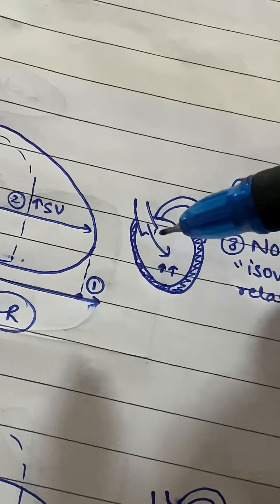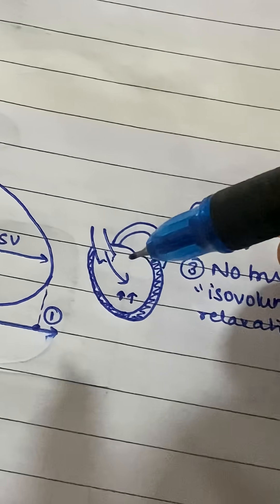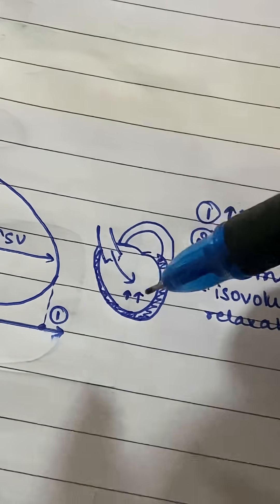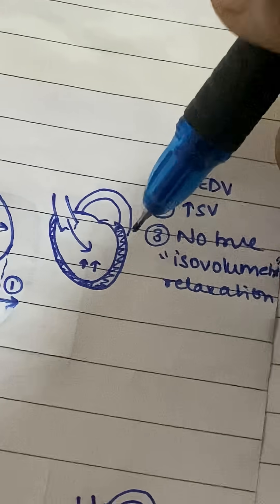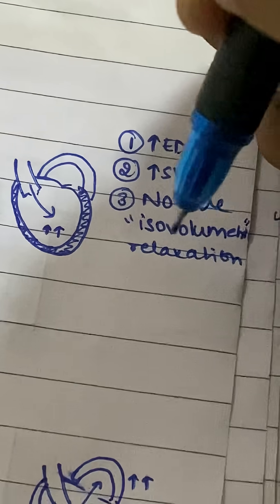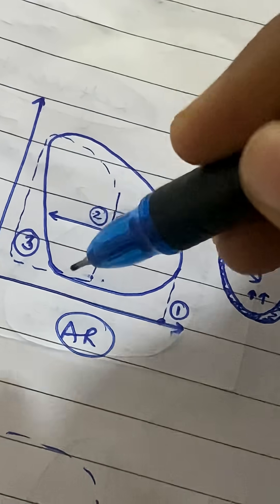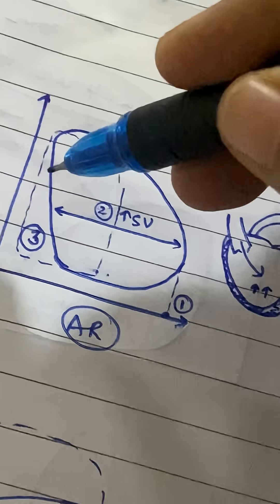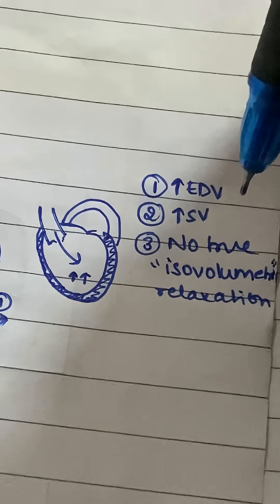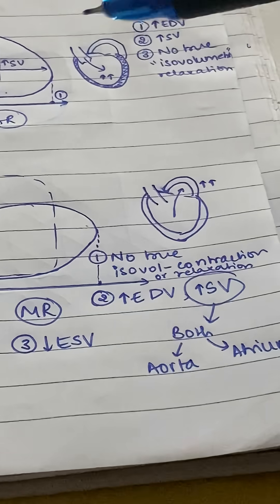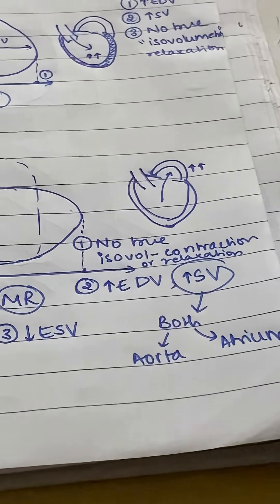A little more complicated: aortic regurgitation. What happens is during diastole, all the blood that's in the aorta starts coming back into the ventricle. So for the next cardiac cycle, there is an extra amount of blood already in the ventricle — that is why your end-diastolic volume is increased. Also remember that volume does not remain the same during ventricular relaxation because blood is coming back in, which is why the isovolumetric relaxation phase is no longer a straight line. And since end-diastolic volume has increased, stroke volume has also increased.